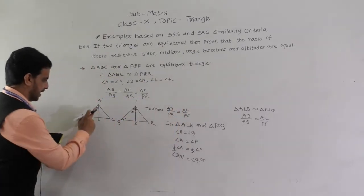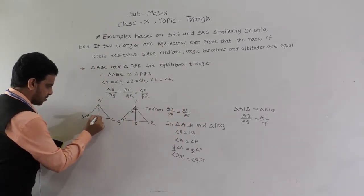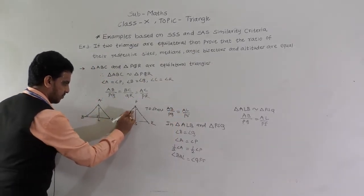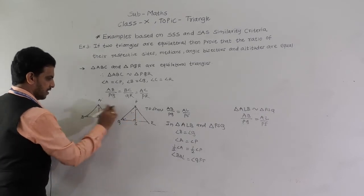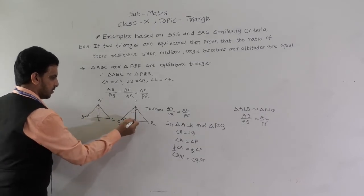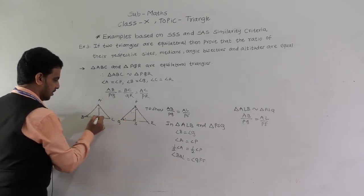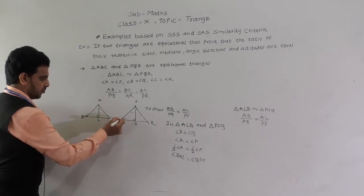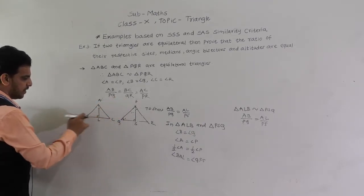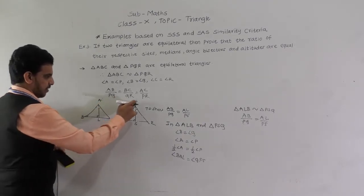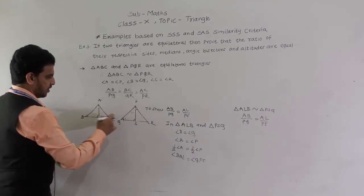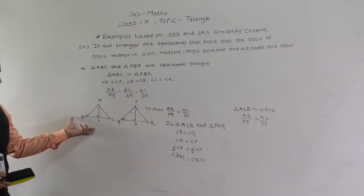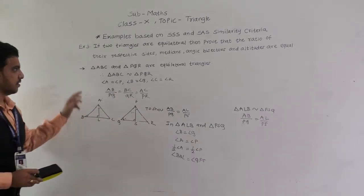Similarly, for altitudes: if AL and PS are altitudes, they are perpendicular. Using the two equal angles in the respective triangles by AA criteria, triangle ALB is similar to triangle PSQ, and therefore AB by PQ equals AL by PS for altitudes as well.